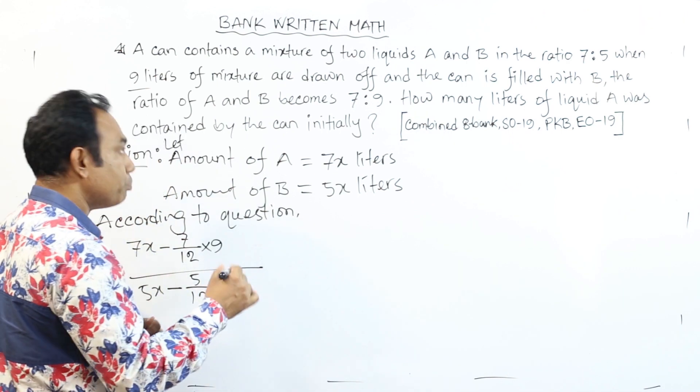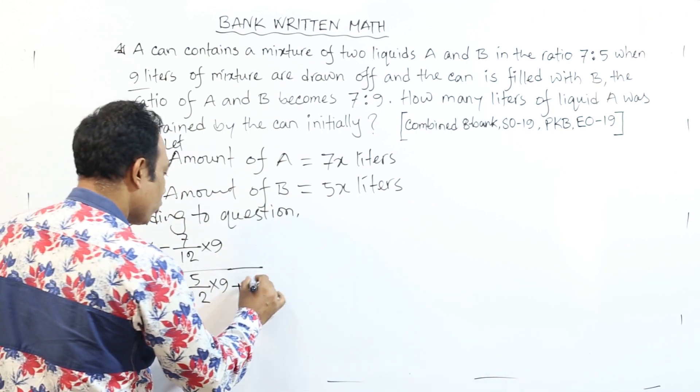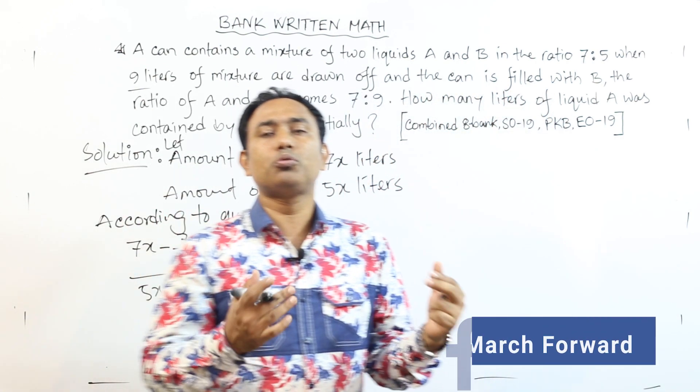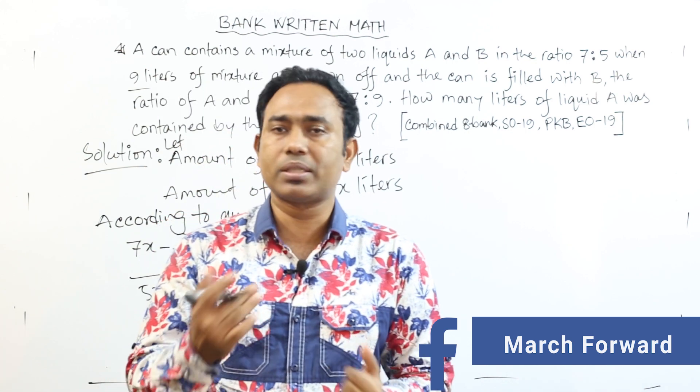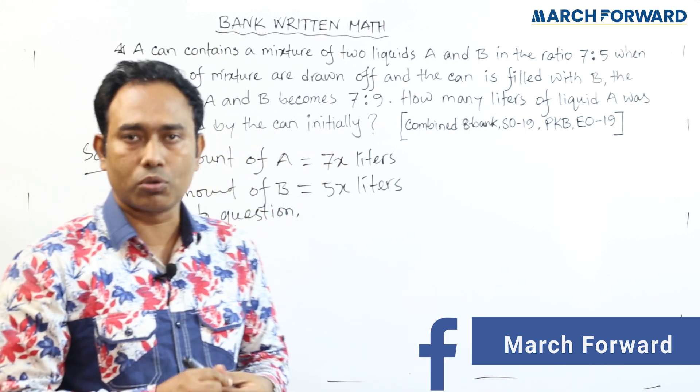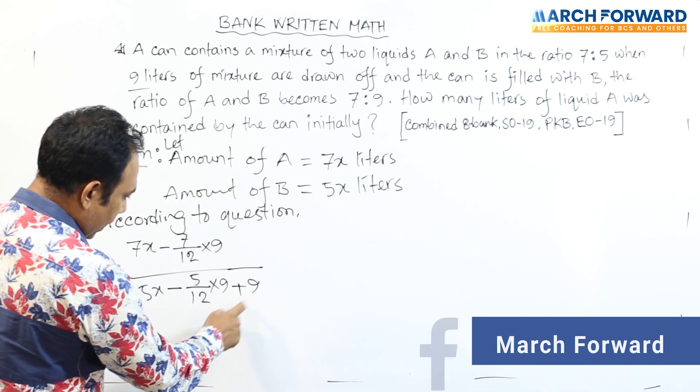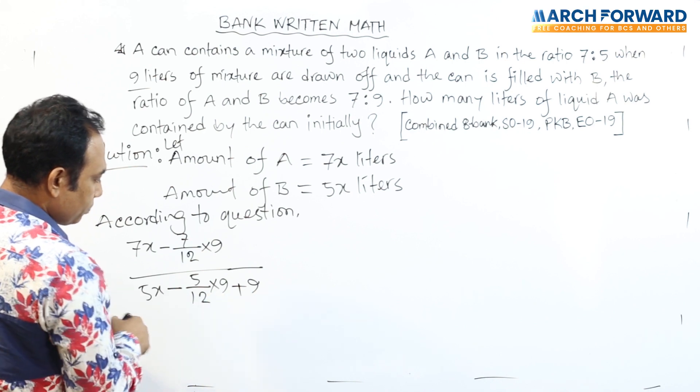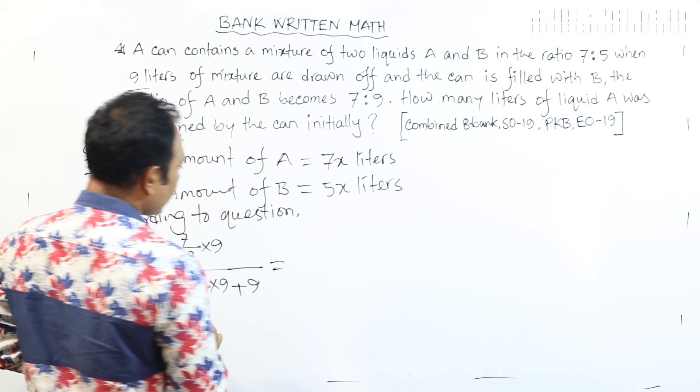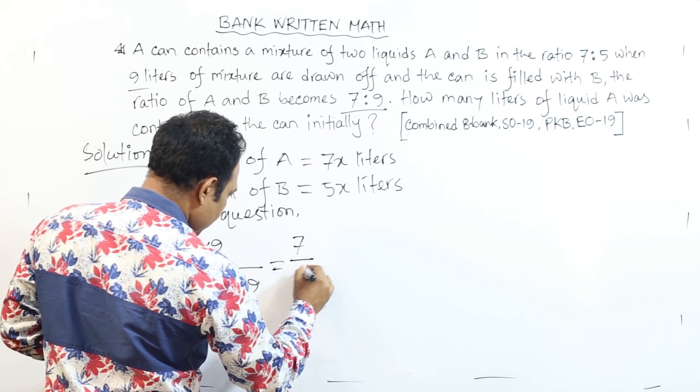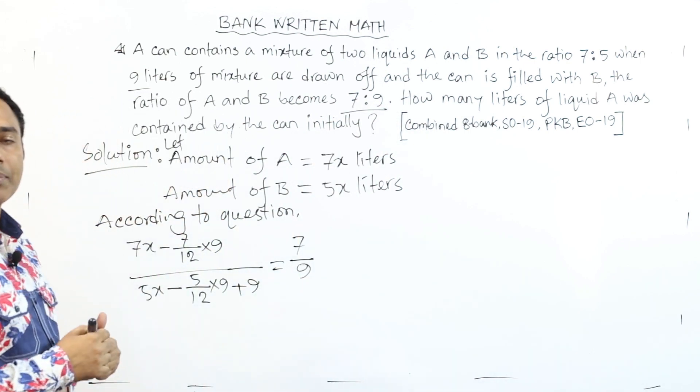And from B's liquid, B is 5x total. From total, we will remove 12's 5 portion of 9 liters. But there's another matter. After removing, only B liquid is again added, this 9 liters. Because it says the can is filled with B. So that's plus 9. Only with B, 9 liters are added. After adding, the new ratio becomes 7 is to 9, 7 divided by 9.